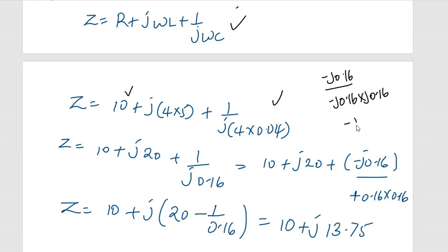This will be negative j0.16 divided by negative 0.16 into j0.16 times negative 1. So negative 1 will go with this. Because it is multiplication of two negatives, it will give you a positive.